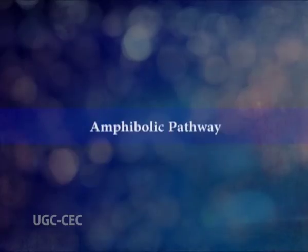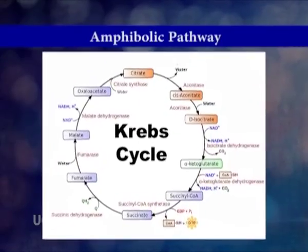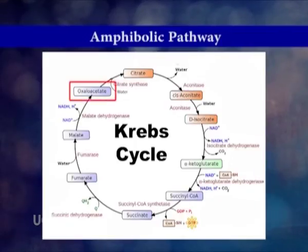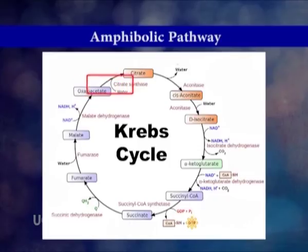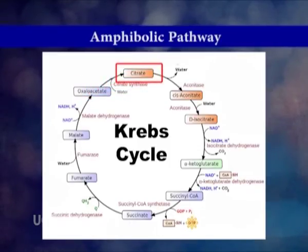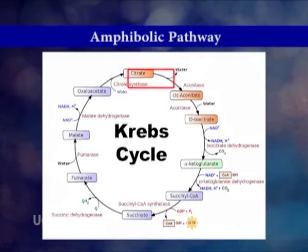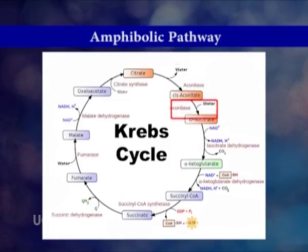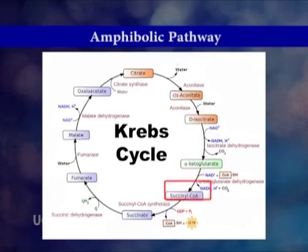And the third pathway is the amphibolic pathway. This term was proposed by B. Davis in 1961 to emphasize the dual metabolic role of such pathways. The term amphibolic is used to describe a biochemical pathway that involves both catabolism and anabolism. The citric acid cycle, the Krebs cycle, is a good example of an amphibolic pathway. The first reaction of the cycle, in which oxaloacetate condenses with acetate to form citrate, is typically an anabolic reaction. And in the next few reactions, which are intramolecular rearrangements, aconitate is produced. The following two reactions are typically catabolic — carbon dioxide is lost in each step and succinate is produced.